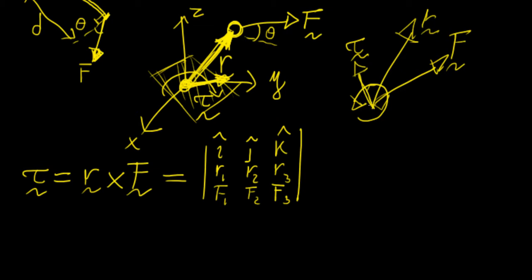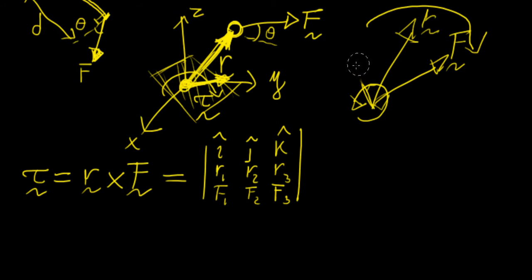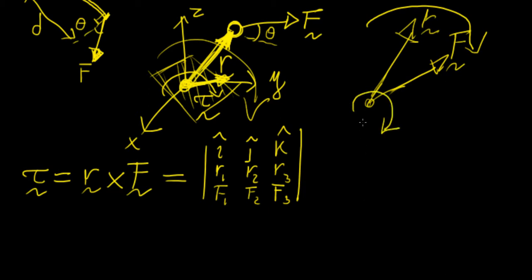You might think this doesn't make sense — if the force points in one direction and is applied at that point, the arm would rotate the other way. The key insight about torque is that we can define it consistently with the physics. If we know the rotation is going this way, we use the right-hand rule: fingers curling in that direction means the torque vector points into the page. That is the actual physical definition.